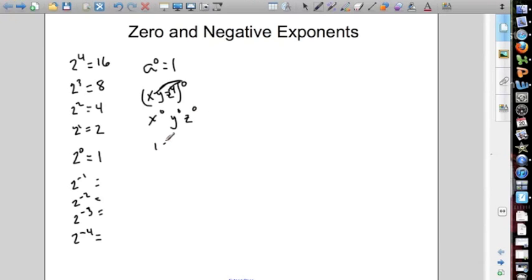And then to the power of 0 is 1, power of 0 is 1, power of 0 is 1, 1 times 1 times 1 gives me 1. So keep track of that. Anything to the power of 0 is just going to end up equaling 1.